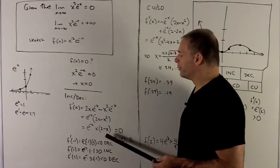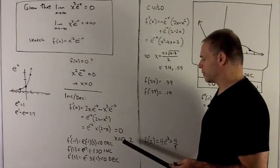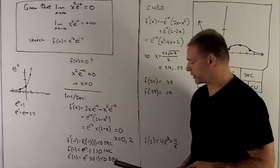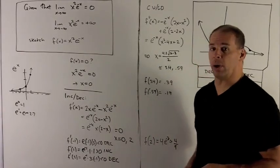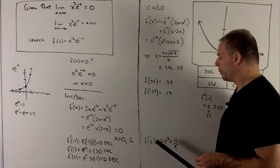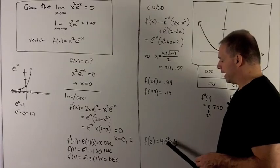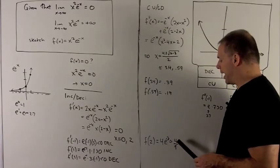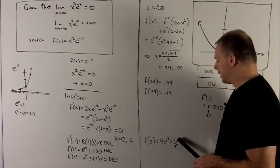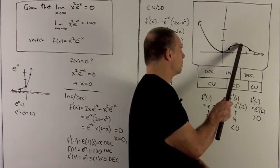When is f'(x) = 0? Since e^(-x) has no effect, it's only when x = 0 or x = 2. Plugging x = 0 gives (0, 0), which we already plotted. For x = 2: f(2) = 4·e^(-2). Since e ≈ 2.7, we approximate e² ≈ 9, giving roughly 4/9. So that point is a little below one-half.